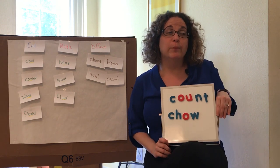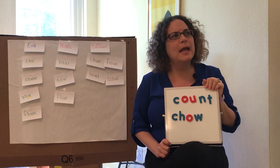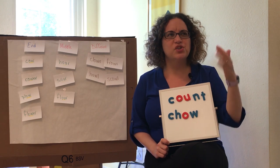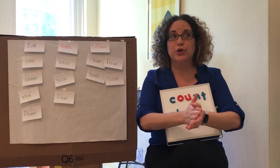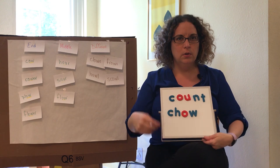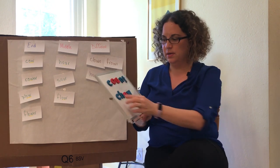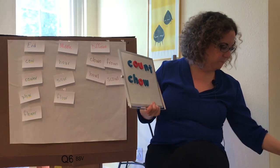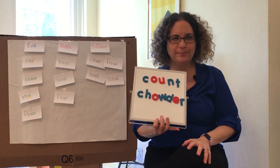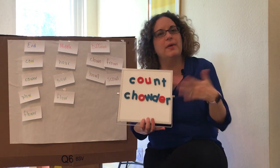What if I was going to change 'chow' to 'chowder'? Chowder is a thick soup — you might have had corn chowder or clam chowder. Let's clap it: chow-der. Where do you hear the ow? At the end of that first syllable — chow-der. So if my ow is at the end of a syllable, I'm going to use O-W. Let's spell 'chowder.' And do you see how saying the word slowly and listening for where that ow is can help you decide how to spell it?